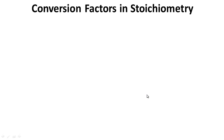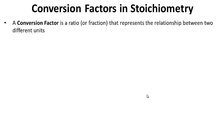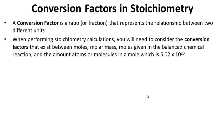Conversion factors in stoichiometry: a conversion factor is a ratio or fraction that represents the relationship between two different units. When performing stoichiometry calculations, you will need to consider conversion factors that exist between moles, molar mass, moles given in the balanced chemical reaction (the molar ratio), and the amount of atoms or molecules in a mole — which is 6.02 × 10²³, Avogadro's number.